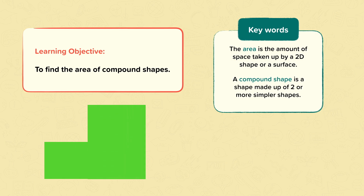This green shape is a compound shape. It can be split into two rectangles. In this nugget we'll just be looking at compound shapes that can be split into squares or rectangles.